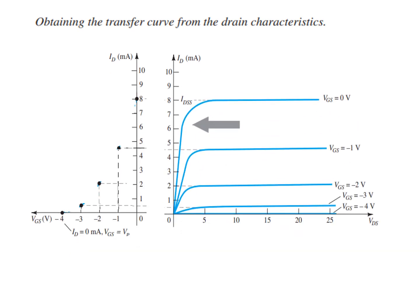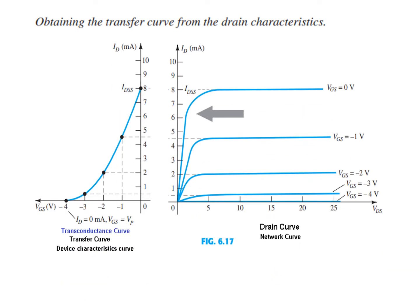For each value of −VGS, we extend lines from the drain characteristics and from the bottom axis. Wherever they intersect, we place a dot. We do this similarly for −2, −3, and at −4 the current is 0, so it sits on the base. Connecting all these points gives us the transconductance curve.